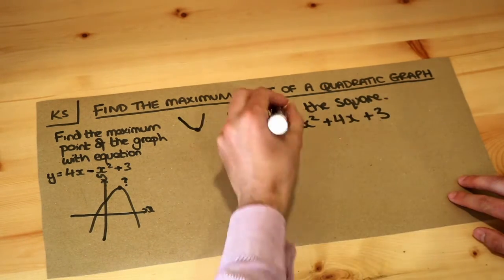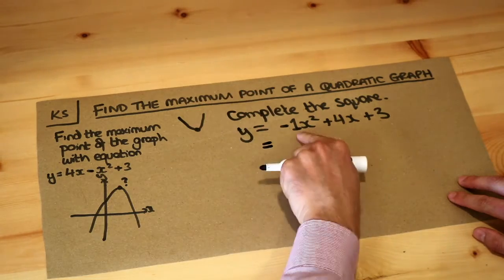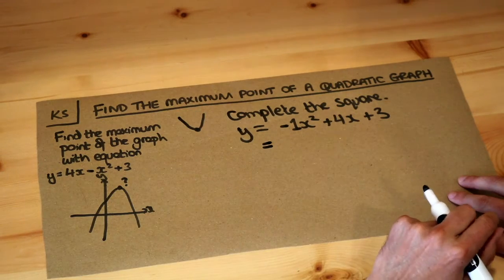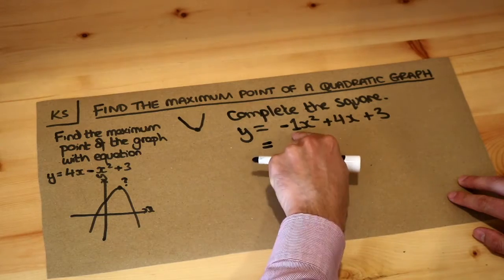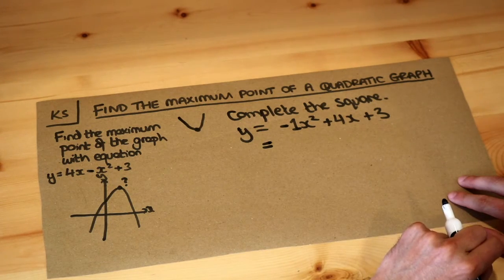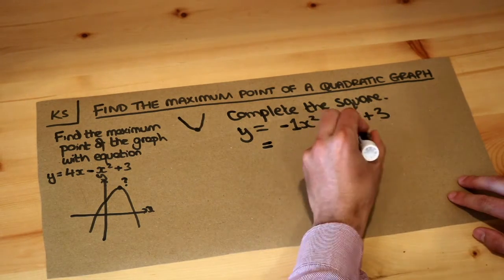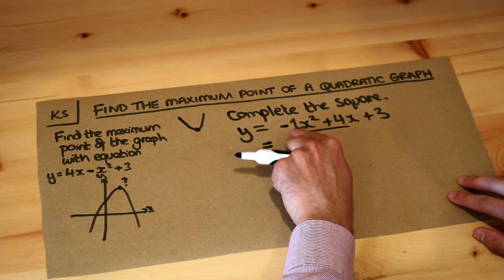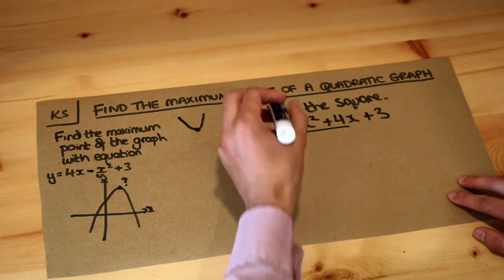Then we need to complete the square. Now it's slightly harder when you have a number in front of the x squared, and do watch my video on how to complete the square when you have a number in front of the x squared which is not 1. So what we do is we factorize that minus 1 in front of the x squared out of the first two terms.